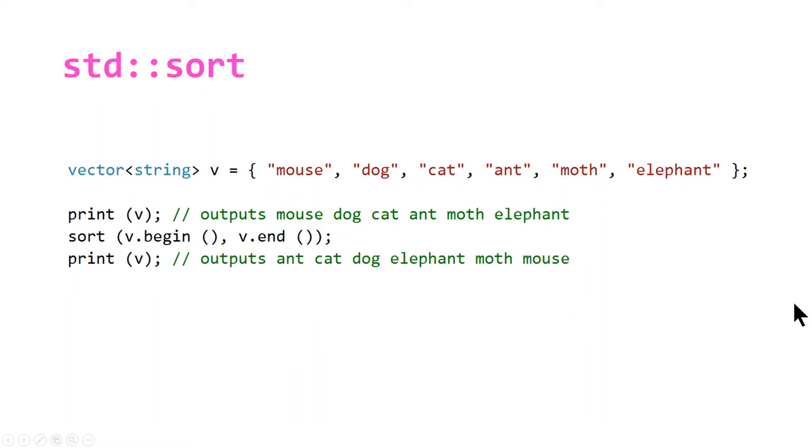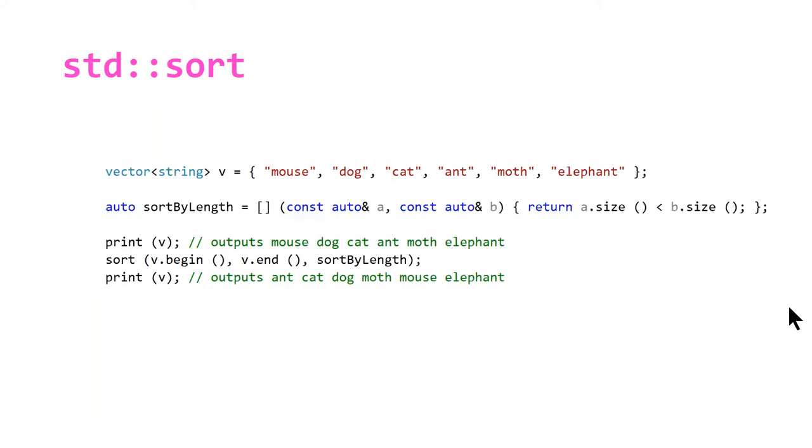This becomes interesting when we make use of lambdas to sort in a custom manner. In this example, we've added a line where we declare a lambda expression, and we're passing that as our third parameter to the sort function. Whenever you're using a lambda with a sort function, you need this boilerplate. Note that you can only use auto with C++14, this is called a generic lambda. If you're using C++11, instead of auto you need to use string. Then you define the operation for which you want to sort it.